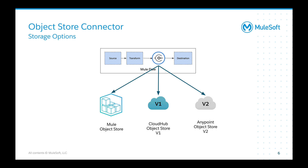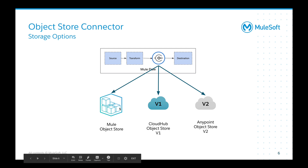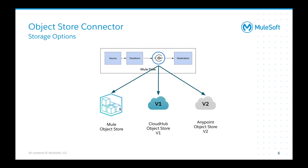The object store connector gives you a variety of different storage options. One of the gotchas within Mule is that depending on the settings of that connector and where you deploy it determines where that data gets stored. If you're using the Mule connector and you deploy to an on-prem Mule runtime, it's going to leverage the Mule object store. If you deploy using Mule 3 and you uncheck 'use AnyPoint Object Store V2', it's going to use version 1. If you leave that checked, it'll default to AnyPoint object store V2.